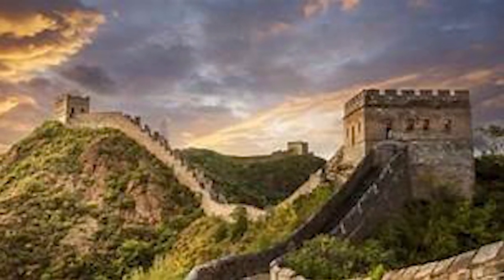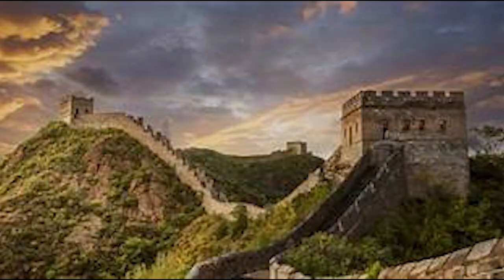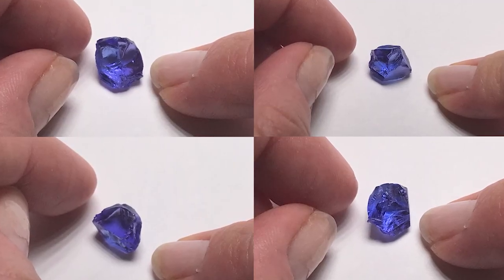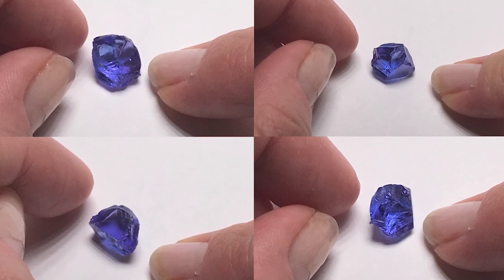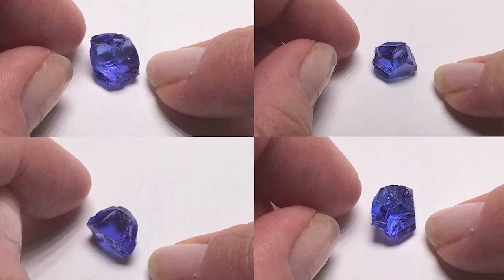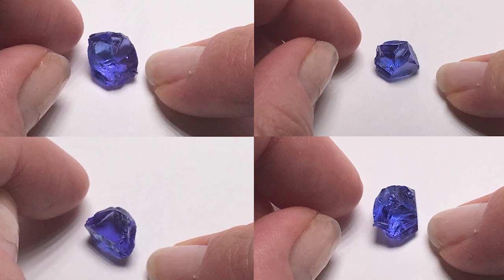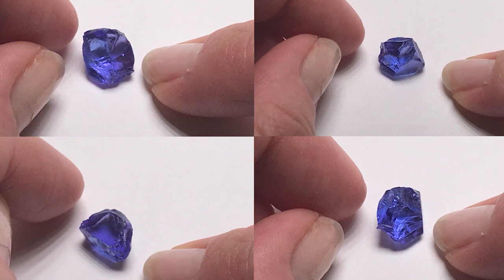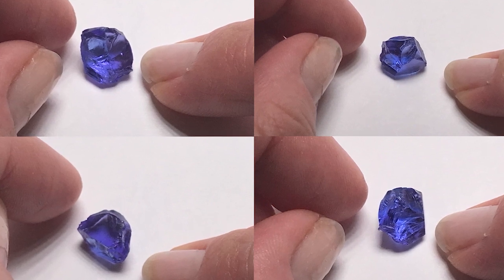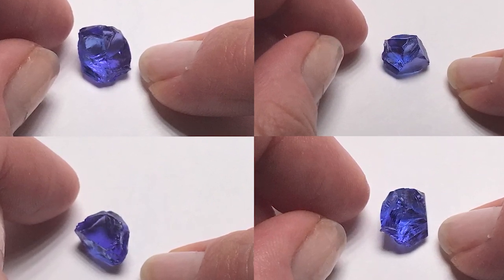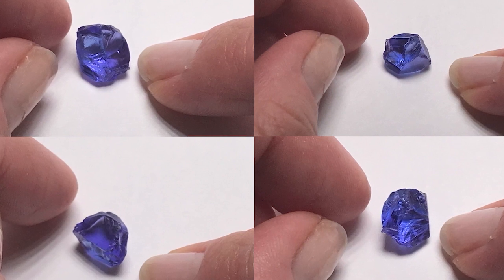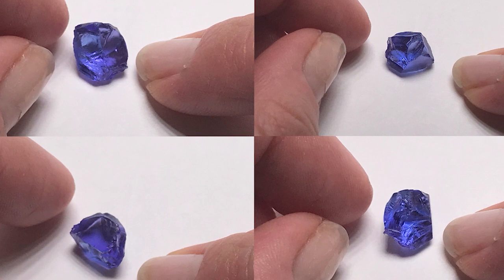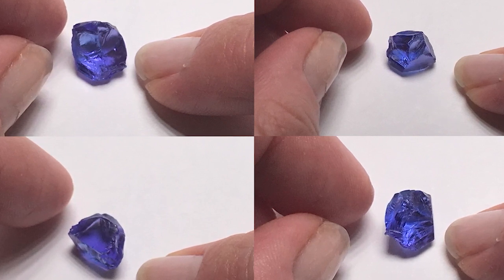Tanzanite is also one of the three birthstones for December, along with blue zircon and turquoise. Obviously, Tanzanite wasn't originally a birthstone, since it was only recently discovered. In fact, it was added to the birthstone calendar list in 2002. Tanzanite hasn't been around all that long, but it has soared in popularity, and currently, it's the number two best-selling colored gemstone just behind sapphire.